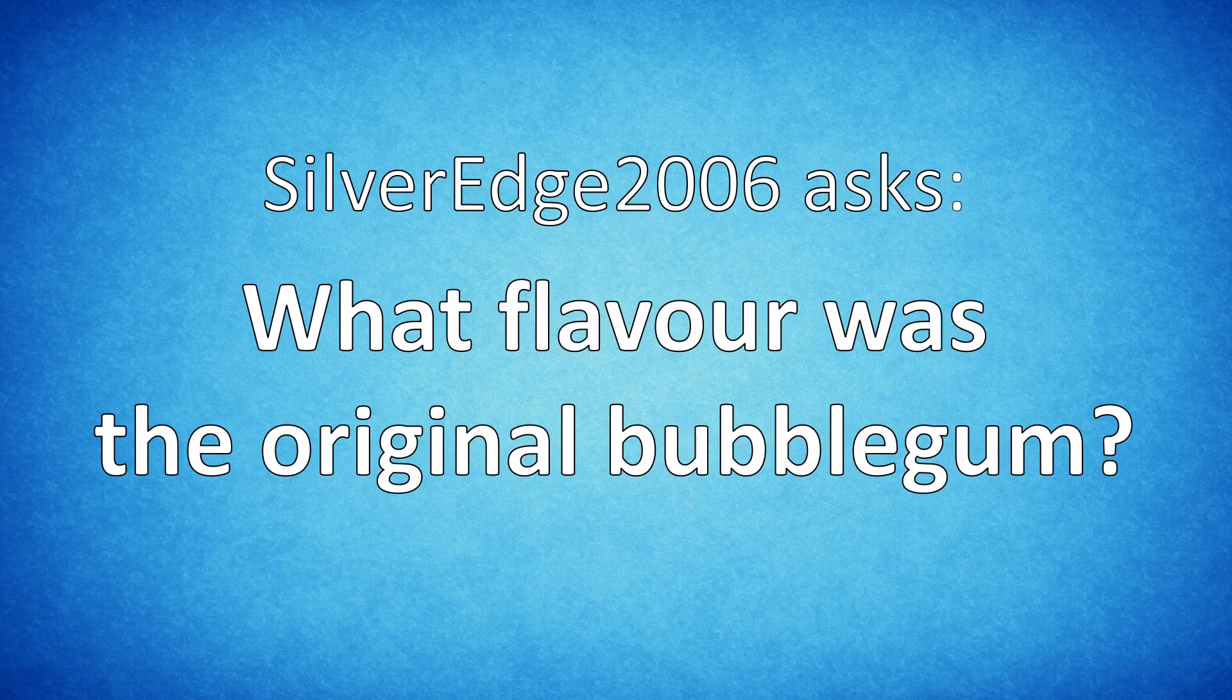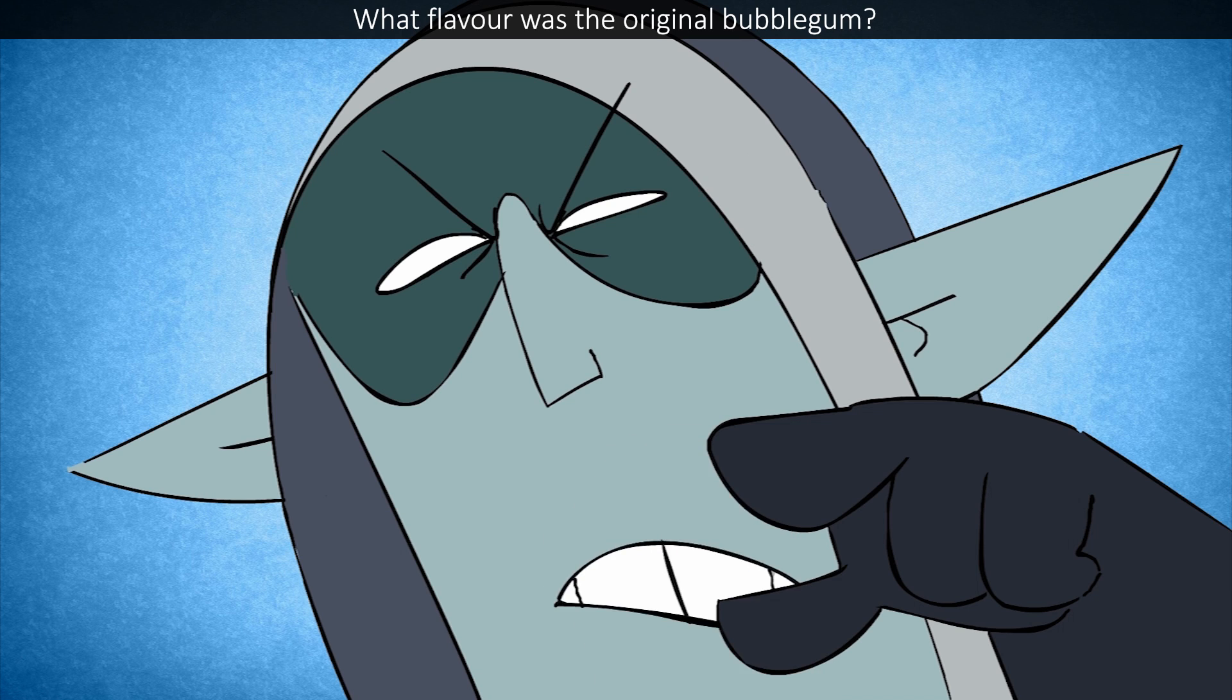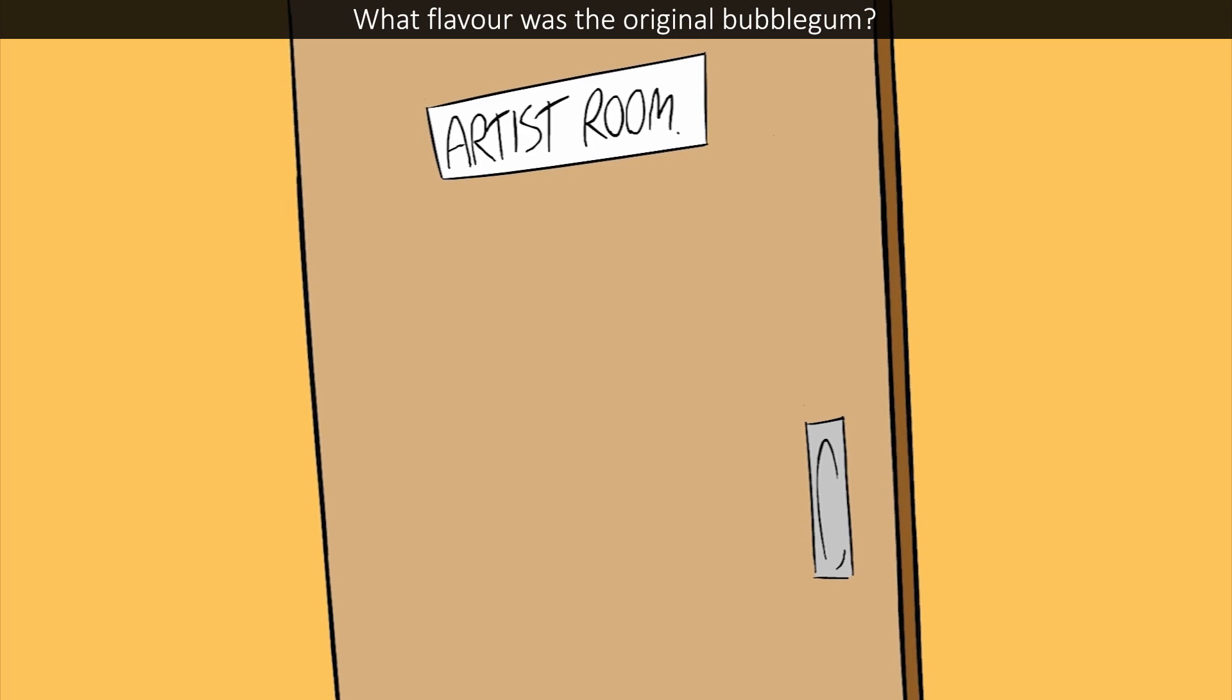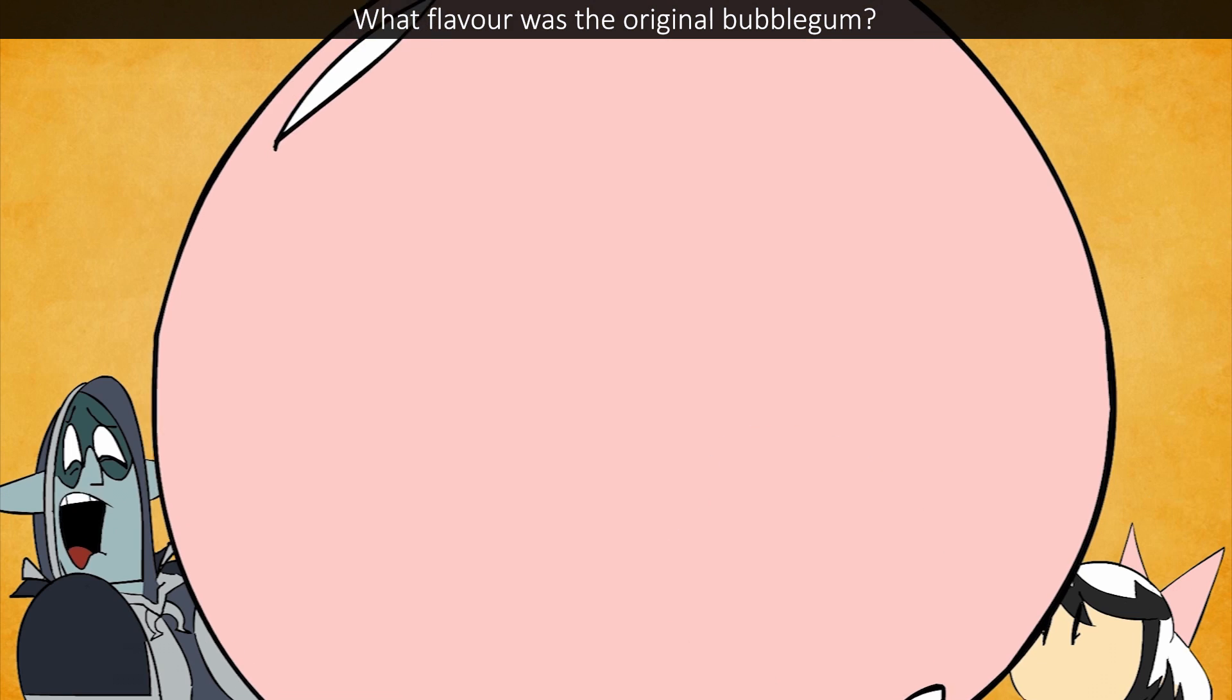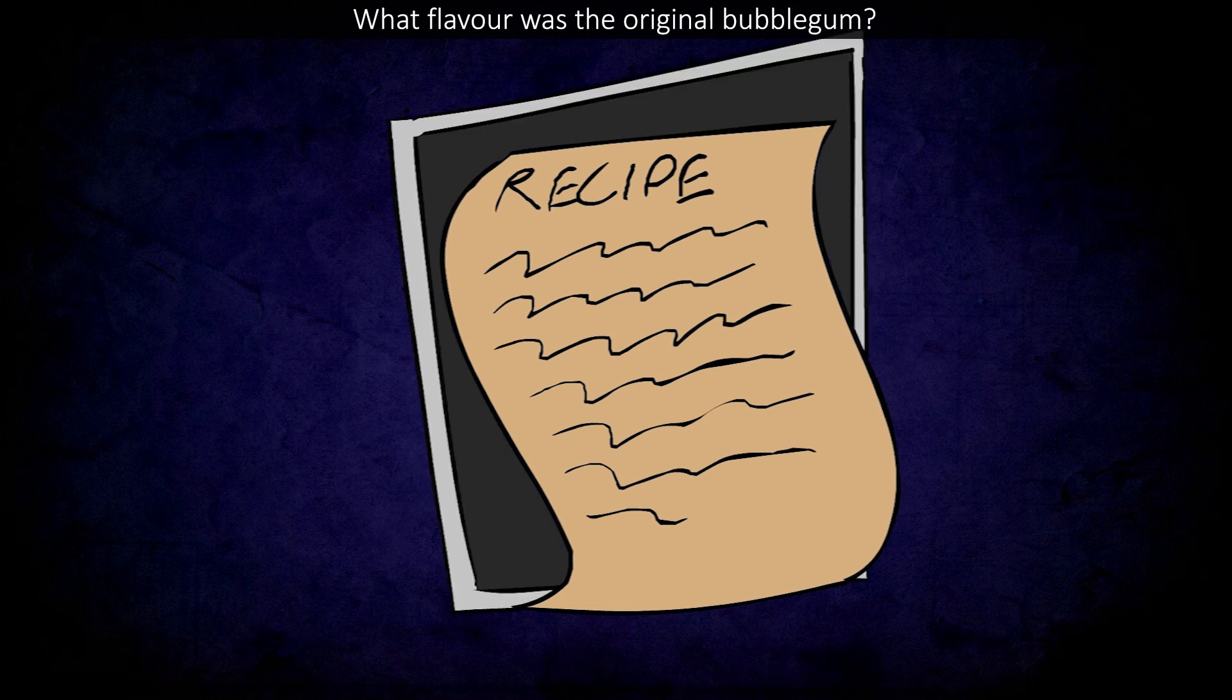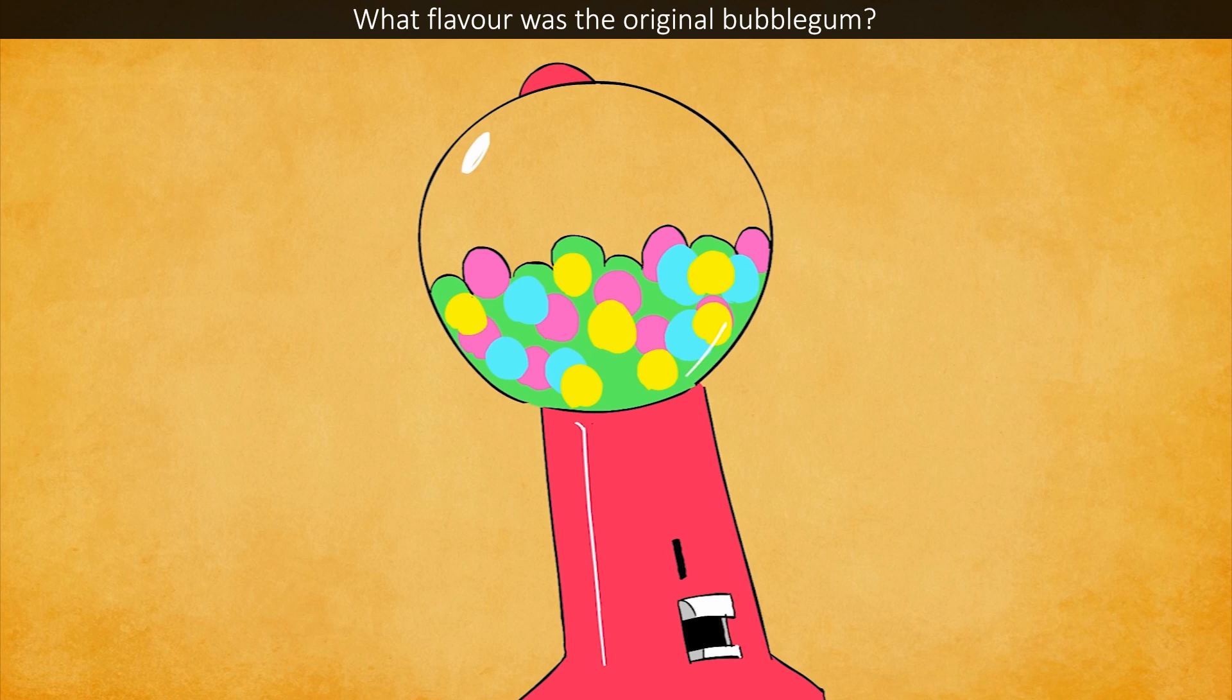SilverEdge2006 asks, what flavour was the original bubblegum? Gross! Bubblegum is the dumbest invention ever, and you should feel ashamed if you chew it. You know who made this trash? Those Japanese kawaii schoolgirls and weirdos like AndyMations. It's disgusting! Get that filth away from me! The first bubblegum created by Walter Deimer of the Fleer Company in 1928 had a unique flavour that has been kept secret. Called Double Bubble, the gum likely contained a combination of natural and artificial fruit flavours to create a distinct bubblegum taste. The first successful chewing gum flavour was licorice.